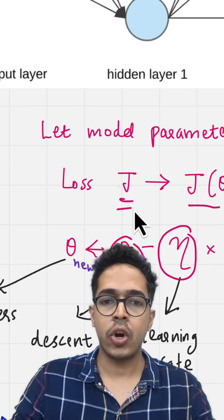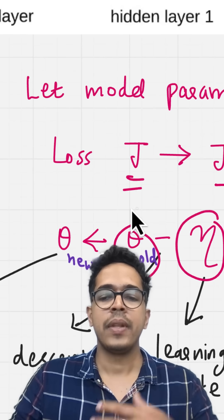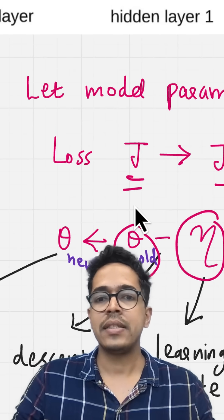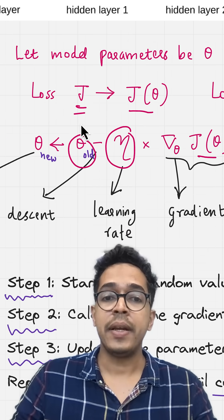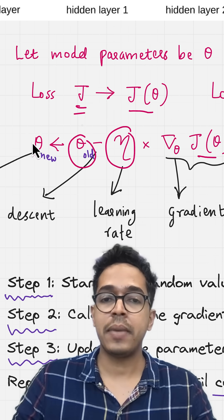J, called the loss, is the difference between the predicted value by the neural network minus the actual value. If the loss is very high, it means your parameters, weights and biases, are not good.